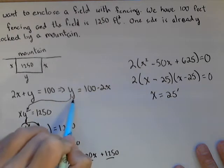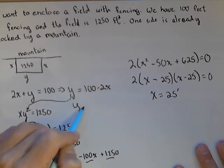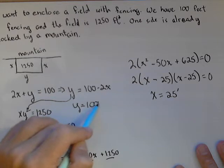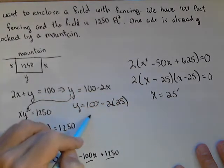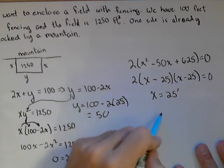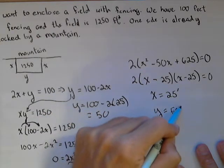To find y, well, remember we already solved y in terms of x here. So, y equals 100 minus 2 times the 25 feet or 50. Well, y equals our 50 feet.